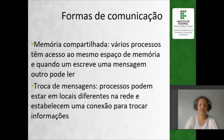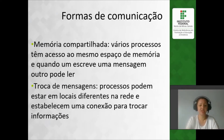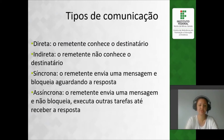Uma outra forma dos processos se comunicarem é através da troca de mensagens — uma forma mais indireta. O processo A conhece o processo B, então ele manda mensagem diretamente para o processo B. Eles podem estar, inclusive, em locais diferentes na rede. Eles estabelecem uma conexão entre eles e, a partir desse momento, podem trocar mensagens até que a conexão seja finalizada. É uma forma bastante interessante e utilizada de comunicação entre processos.